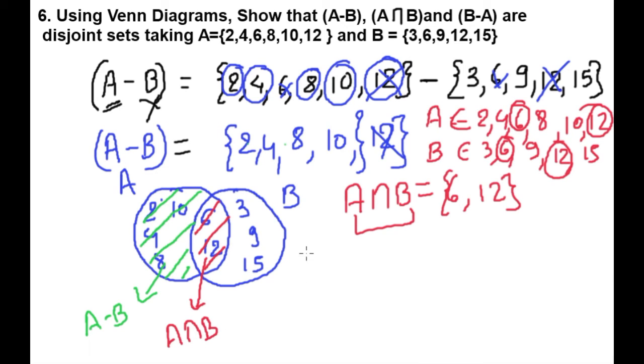Now last one: B-A. B-A means we have to write elements which are only available in B, not in A. First, let me write the elements. Element of A: 2, 4, 6, 8, 10, 12. And element of B: